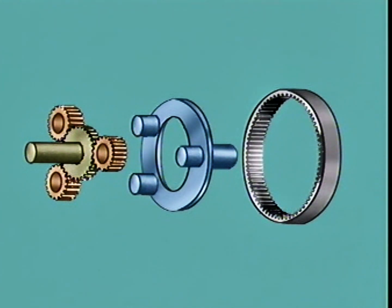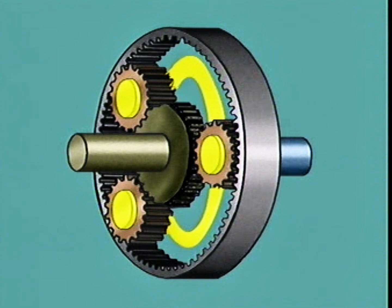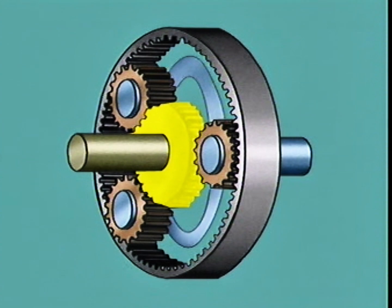A simple planetary gear set can illustrate how to control individual members to produce a particular output or neutral. This planet carrier is attached to the output shaft. The sun gear is attached to the input shaft from the turbine.